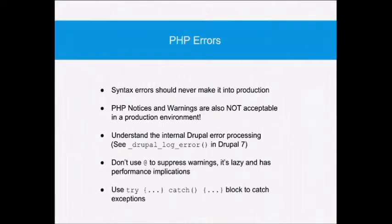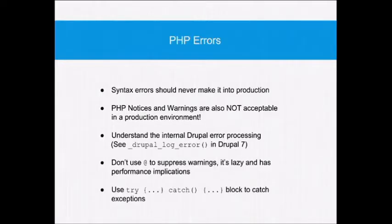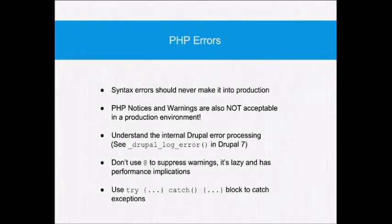Coming to PHP itself: syntax errors should never make it into production. But that includes notices and warnings too. If you understand how Drupal 7 executes an error — it goes through the code, and if it can't find an array index, it jumps off to Drupal's log error function, writes something into the database watchdog table, then comes back and continues the code — that's fine if you have one or two errors on a page. But if you're looping through things, you'll have watchdog errors coming out of your ears, and it slows down the site. If you're writing to the database over and over again in a page load, that's going to slow the site down.